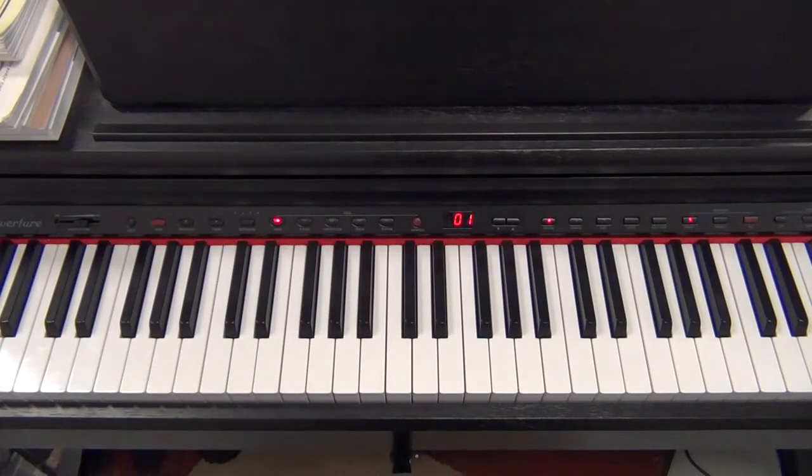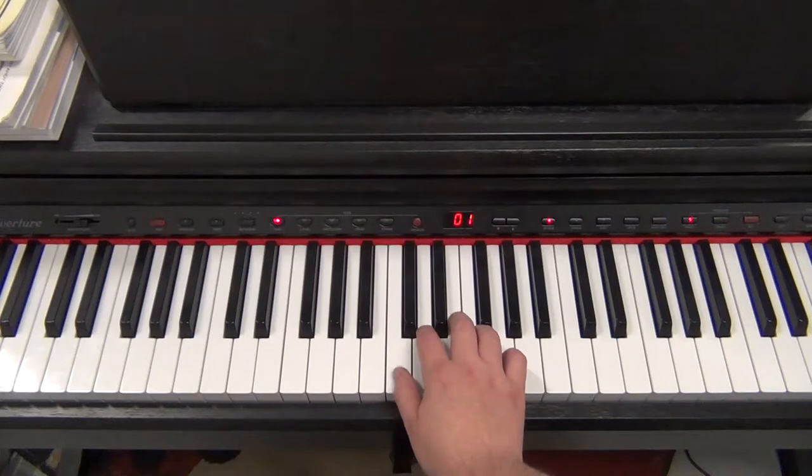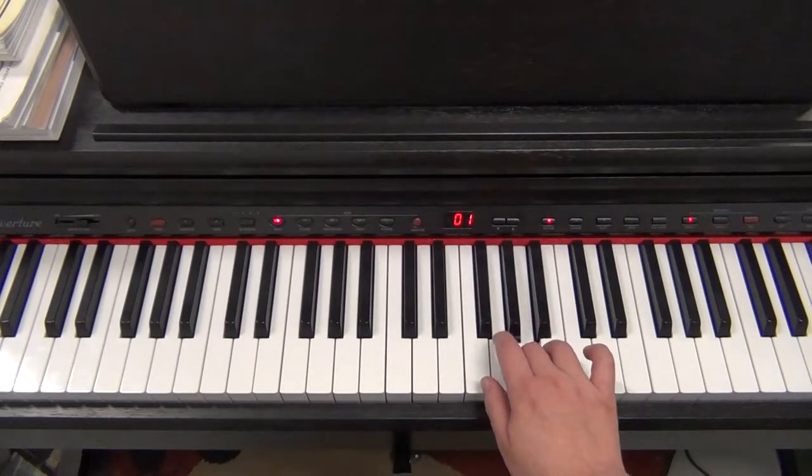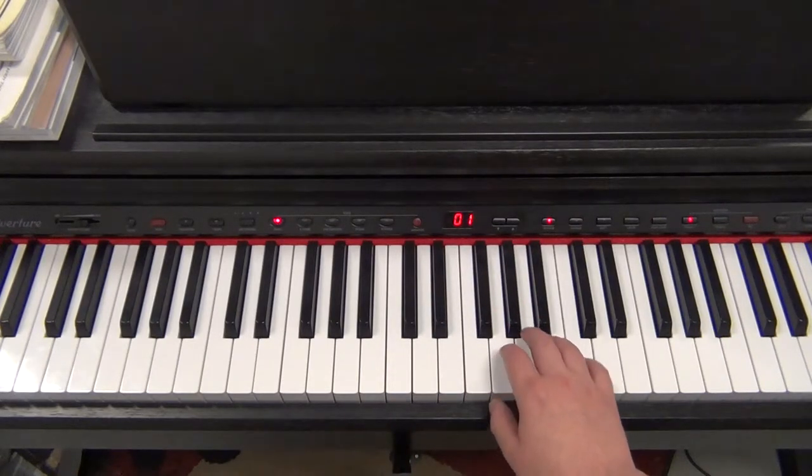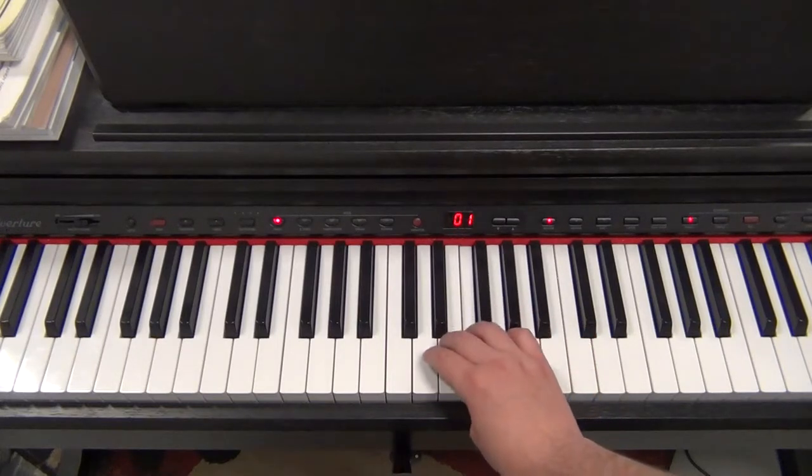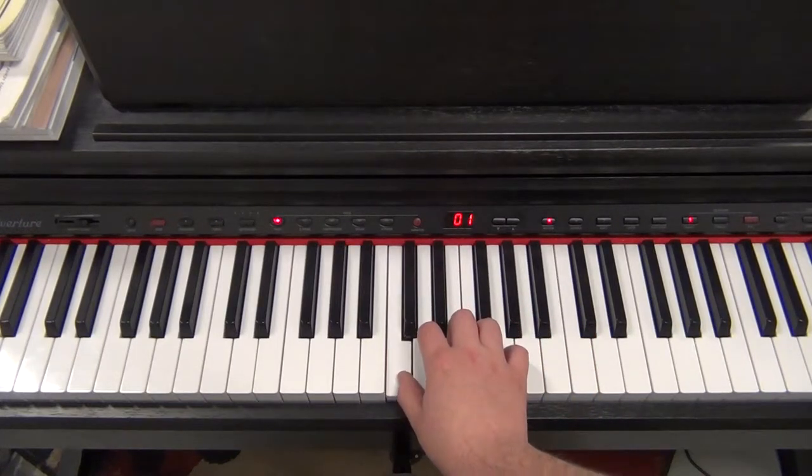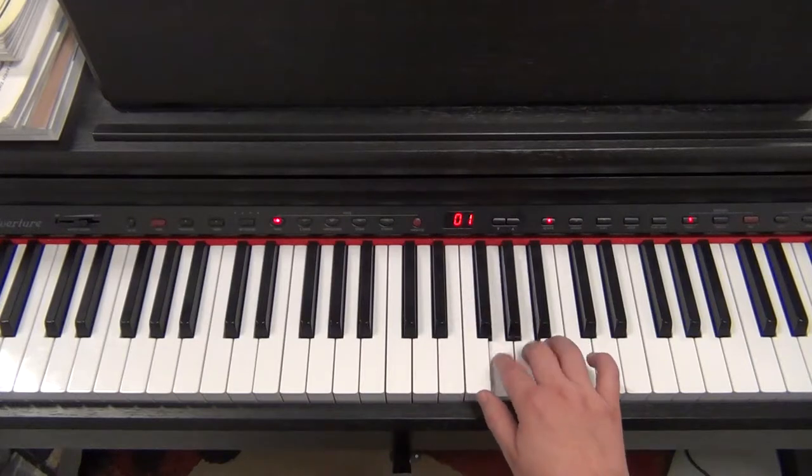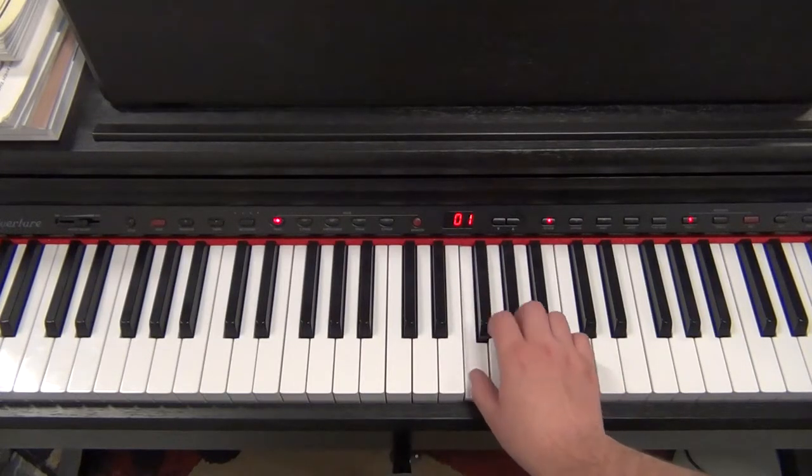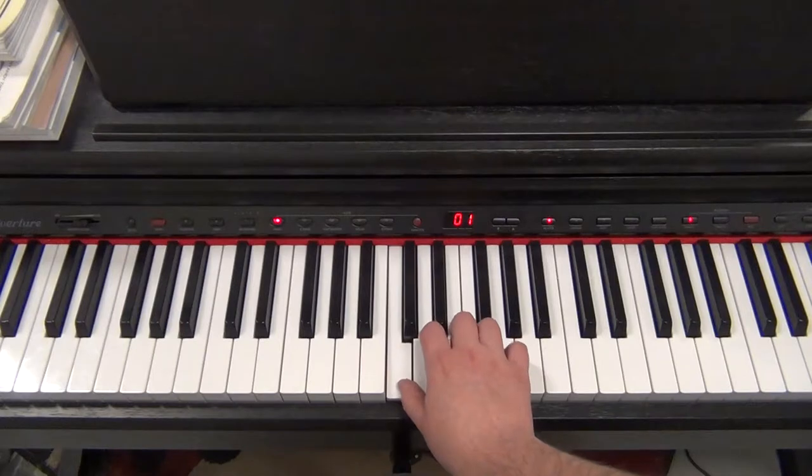Now, if you wanted to try that with your right hand, you would do the opposite. You would use three fingers first, then five, and then five, then three, on the way down. One, C, D, E, F, G, A, B, C, C, B, A, G, F, E, D, C, okay?